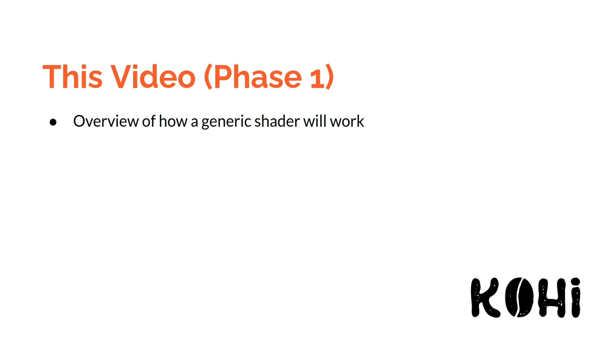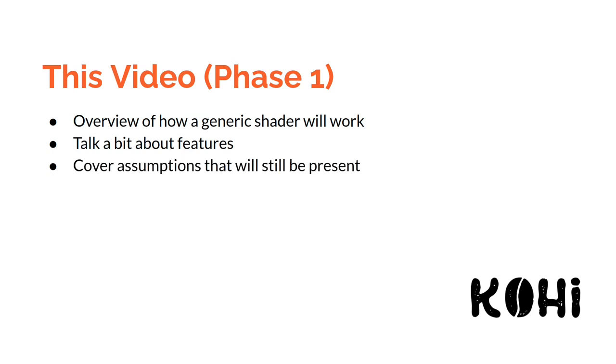For this video, we're going to focus on phase one. This doesn't necessarily mean we're going to have four different videos for this — I suspect some phases will be combined, so we're probably going to wind up with two, maybe three videos. For phase one, the first thing we're going to do is provide an overview of how a generic shader will work, then talk about features and cover some assumptions that will still be present even after the refactor, as well as review the code for the generic Vulkan shader.